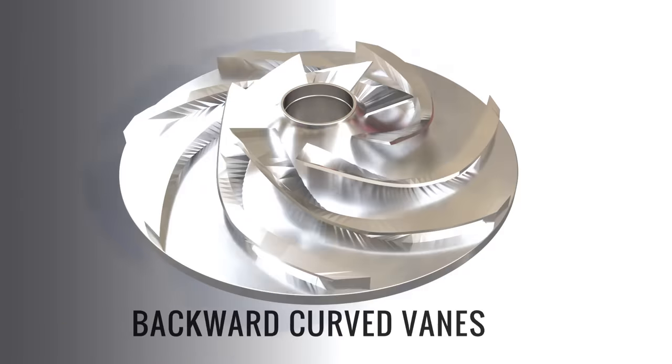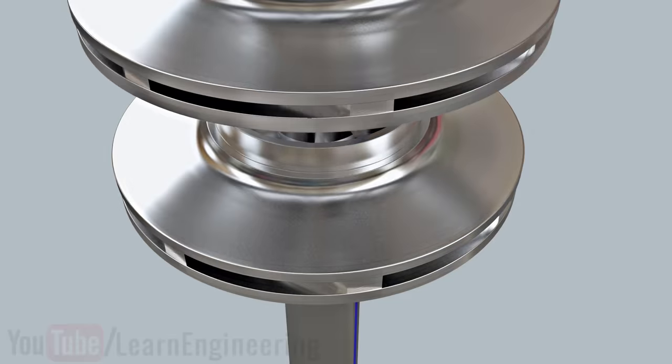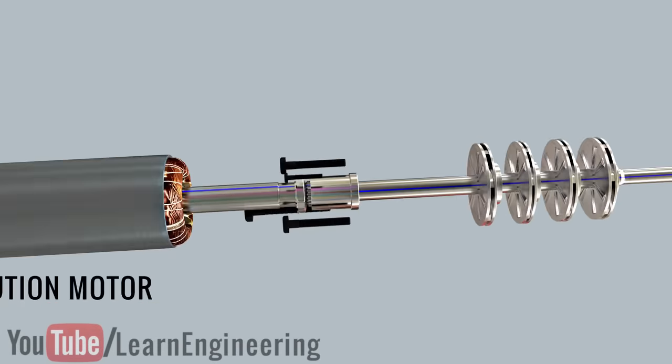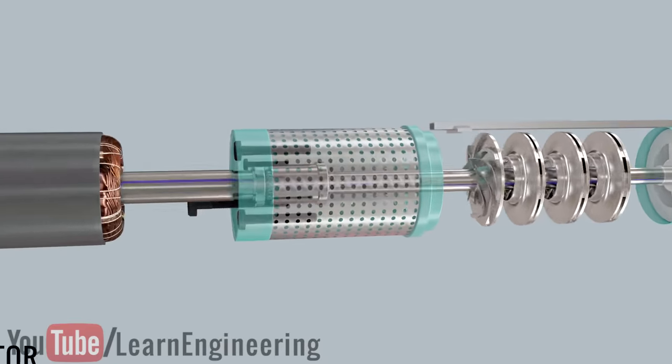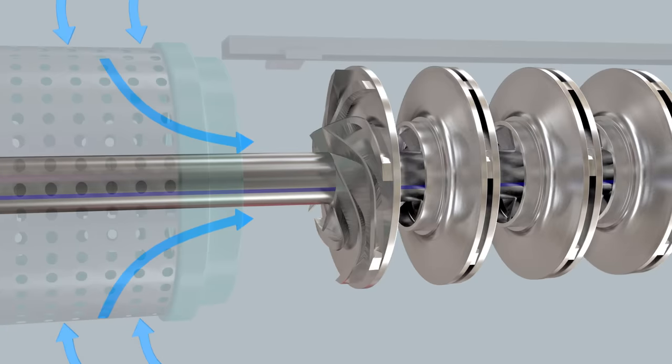The impeller blades are the backwards curve type. Here, many of the impellers are connected onto a single shaft, and this shaft is driven by an induction motor. The water enters through the eyes of the impellers, and they are then thrown out radially due to centrifugal action.